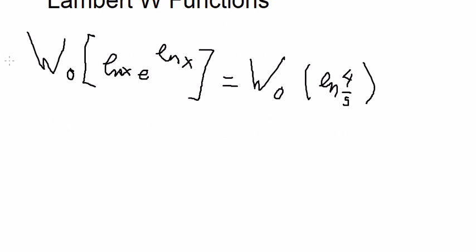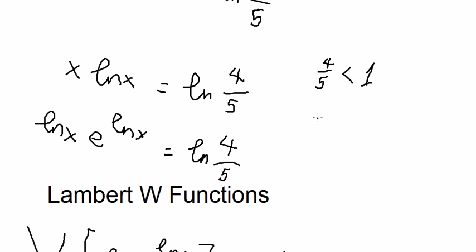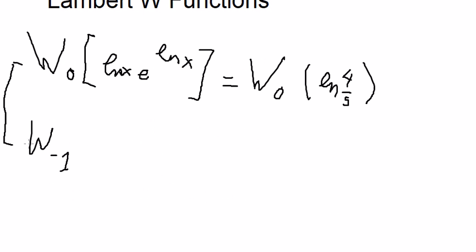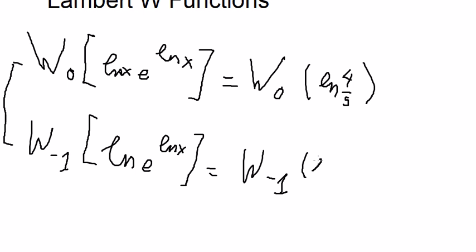And the second one, that should be W negative one, because this one is smaller than number one. That's why you get W_{-1} of ln s times ln e to the power of ln s equals to W_{-1} of ln 4 over 5.